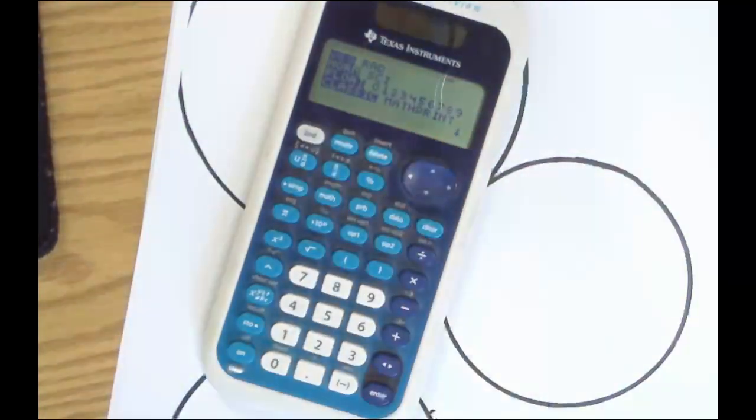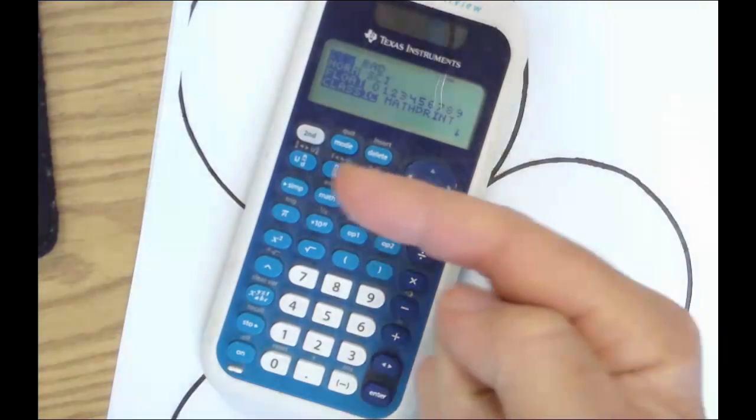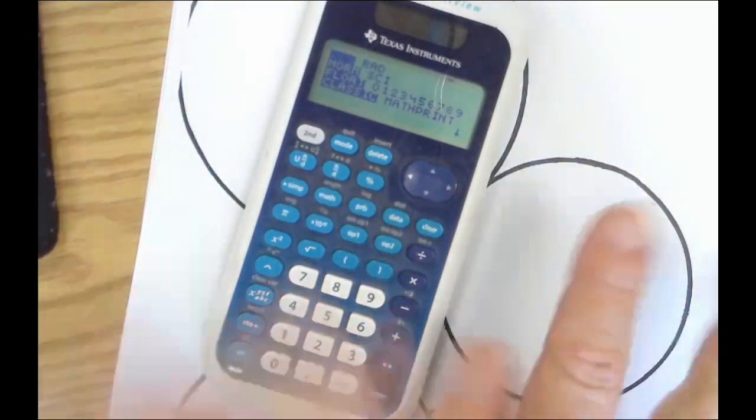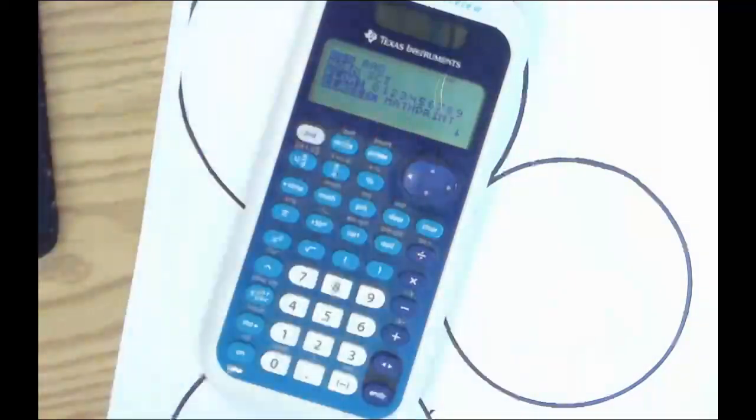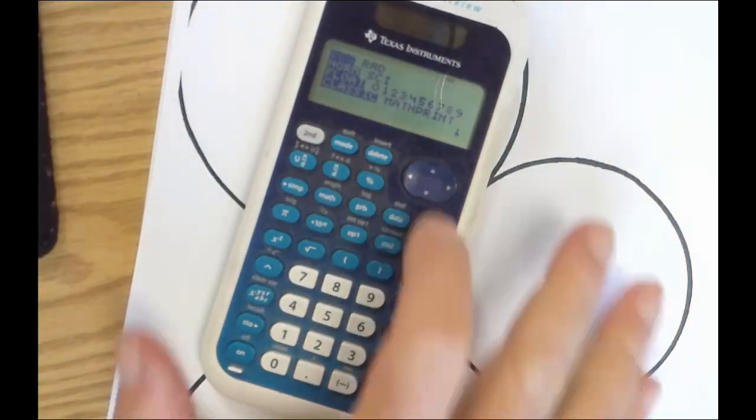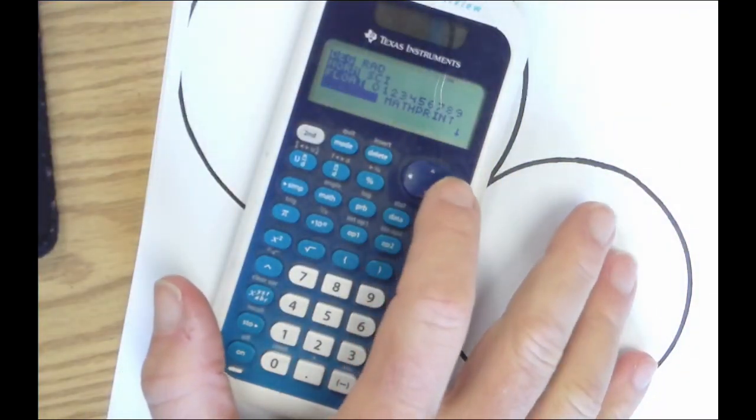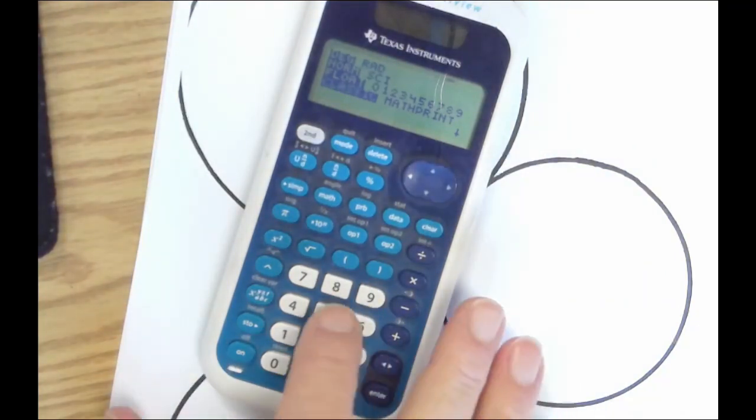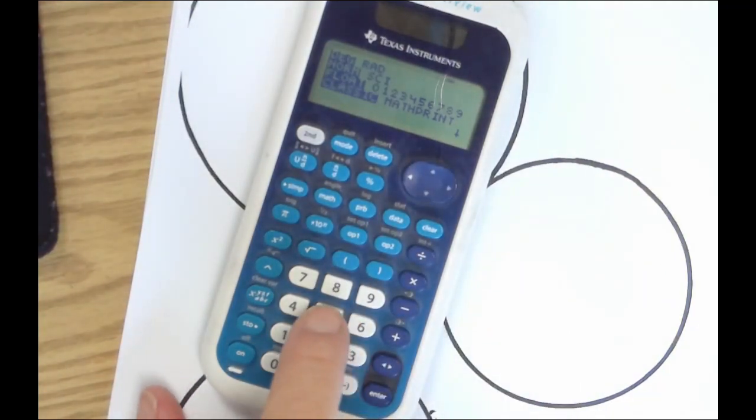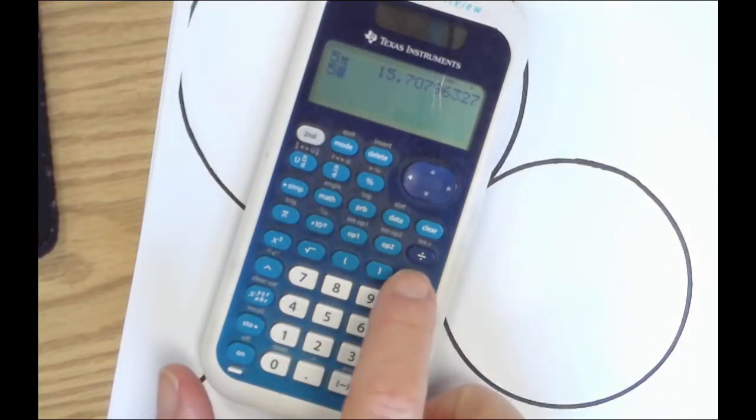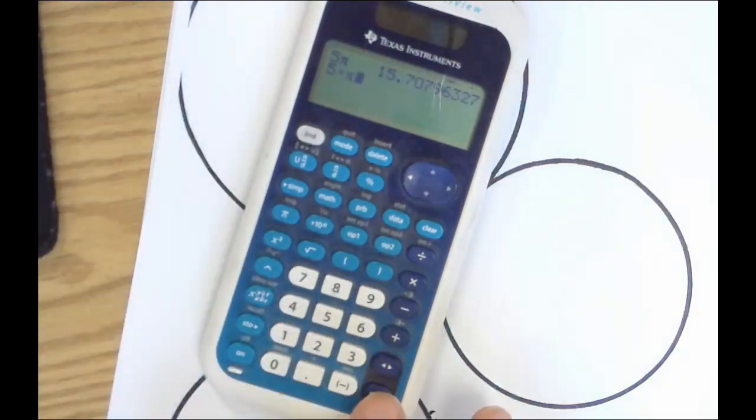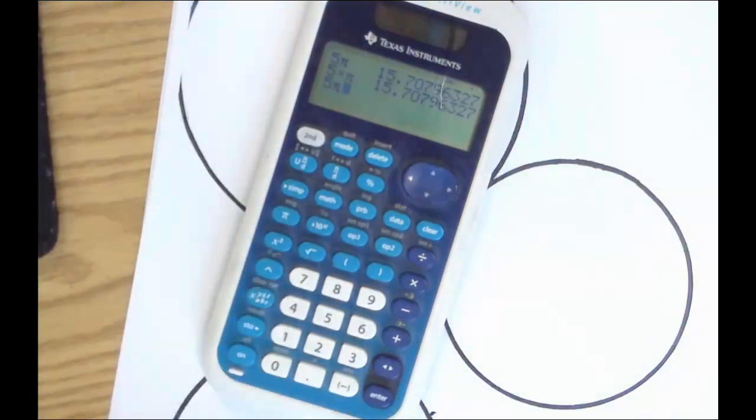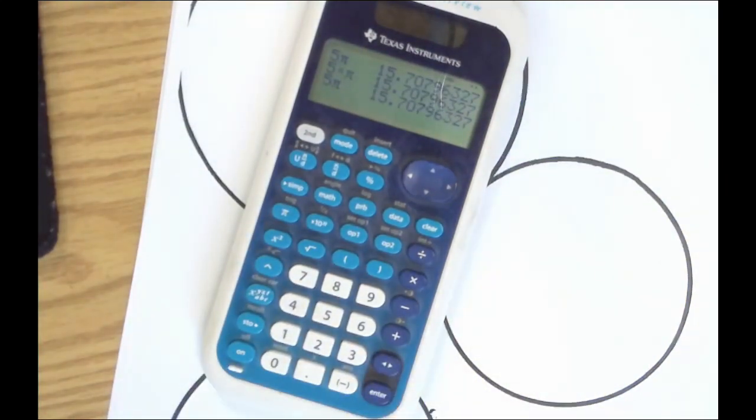So for all you advanced calculator people, once you have your mode set up like this, so all the shaded areas are on the left and you're in classic most importantly, you have the choice. You can go some number times pi and get that, or you can just go some number pi and hit enter. Same answer, right? You see it right there.